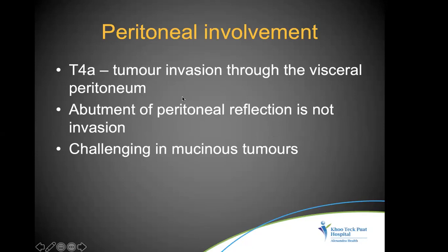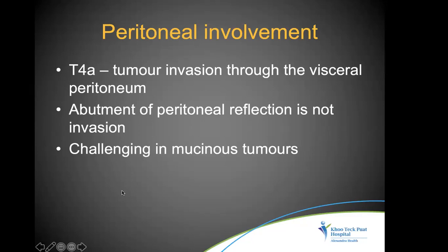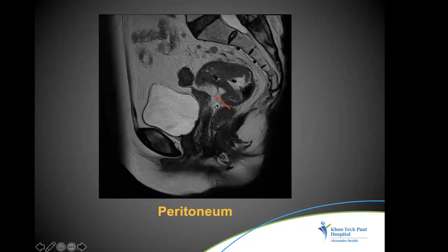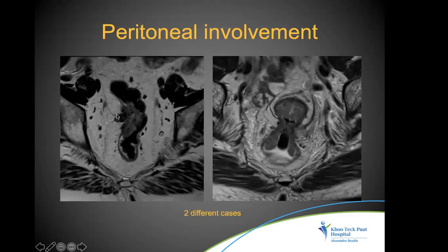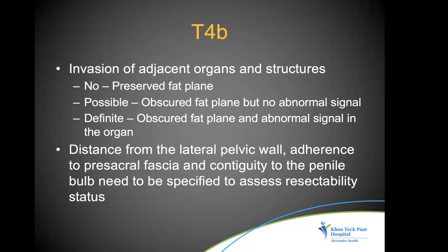T4a requires invasion through the visceral peritoneum, not just abutment — if the tumor lies at the peritoneal reflection without invading, it is not T4a. This can be challenging with mucinous tumors, where extracellular mucin and mesorectal fat are both T2 bright. On coronal images, when you can clearly see tumor signal invading the visceral peritoneum, that confirms T4a. In some cases, thickening of the peritoneum signals invasion on the left side while the right side may look uninvaded.